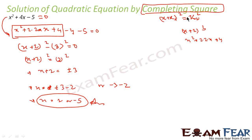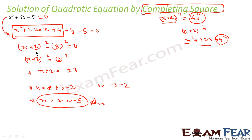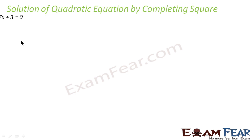I converted the equation into the form (x + constant)² = (constant)². Here 4x is nothing but 2·2·x, and we know (x + 2)² = x² + 4x + 4. So adding and subtracting 4 gives (x + 2)². I'll solve some more examples to make the concept clearer.